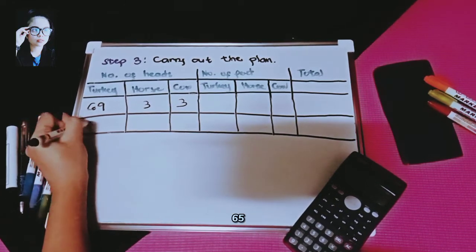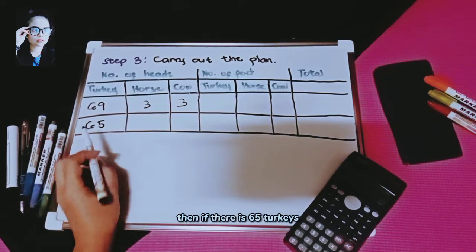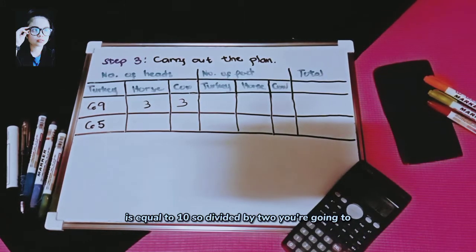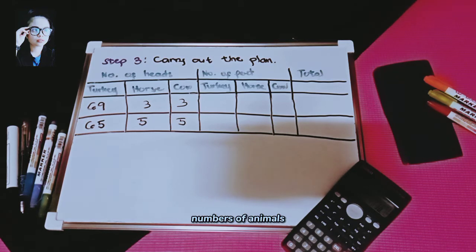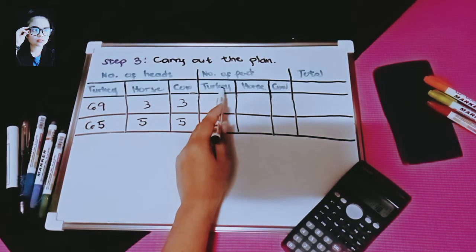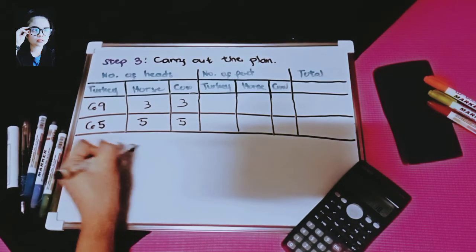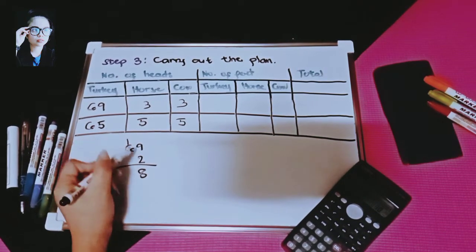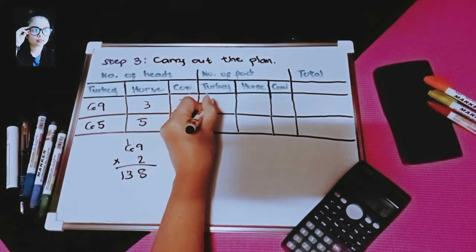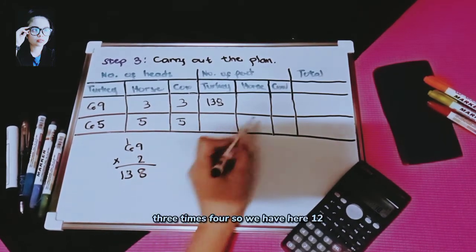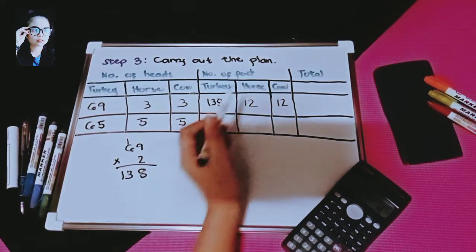For 69 turkeys: 69 times 2 equals 138 feet for turkeys; 3 times 4 equals 12 for horses and 12 for cows. Total: 138 plus 12 plus 12 equals 162. Next guess is 65 turkeys: 75 minus 65 equals 10, divided by 2 gives 5 horses and 5 cows. 65 times 2 equals 130 feet; 3 times 4 gives 12 per horse or cow.